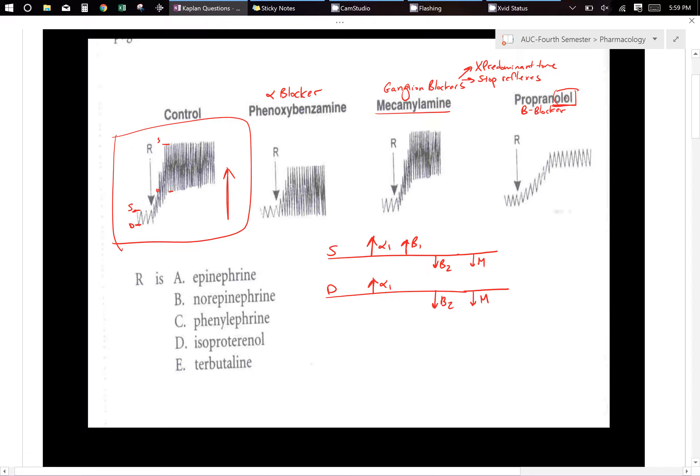All right so the first thing we look at is the control and then let's compare the control with phenoxybenzamine. So let's take a look. We know that there's an increase of blood pressure. It could be an alpha 1 or beta 1.